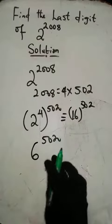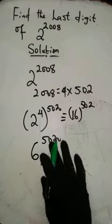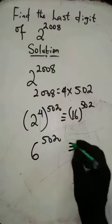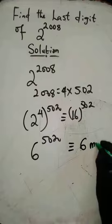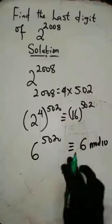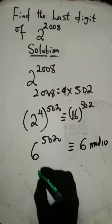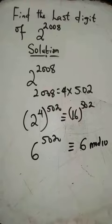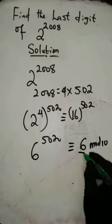Remember that 6 raised to any number greater than 0 always has the last digit of 6. This is division by 10, or modulo 10. So the last digit of 2^2008 equals 6.